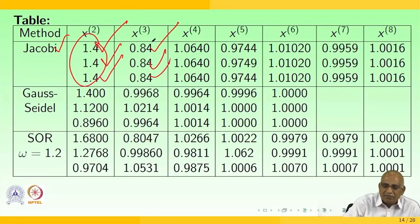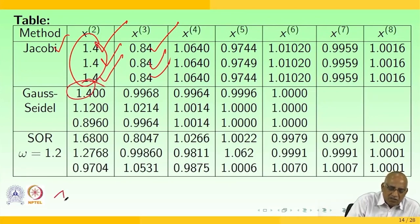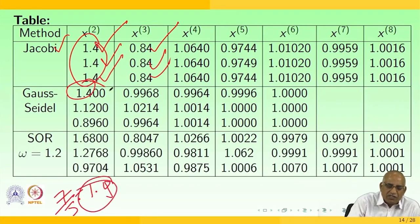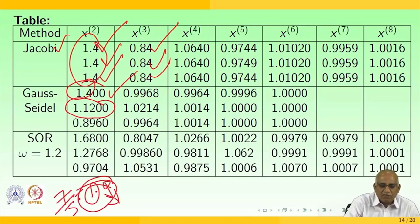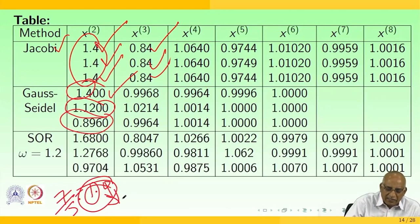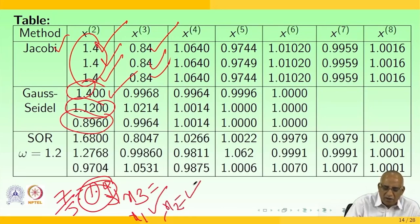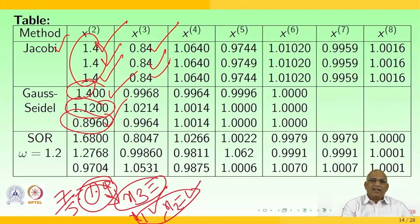For Gauss-Seidel in the first step: x1 = 7/5 = 1.4. Then, using this updated x1 = 1.4 while computing x2, we get x2 = 1.1200. Similarly, using both updated x1 and x2 while computing x3, we get x3 = 0.8960.